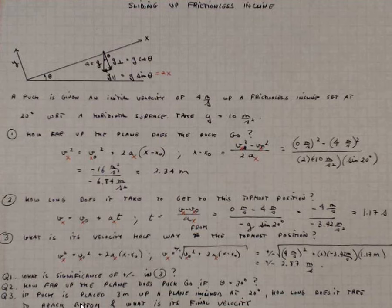Question 3. If the puck is placed 3 meters up the plane, and if the plane is inclined to 20 degrees, how long does it take the puck to reach the bottom of the plane, and what is its final velocity? A couple of questions for you.